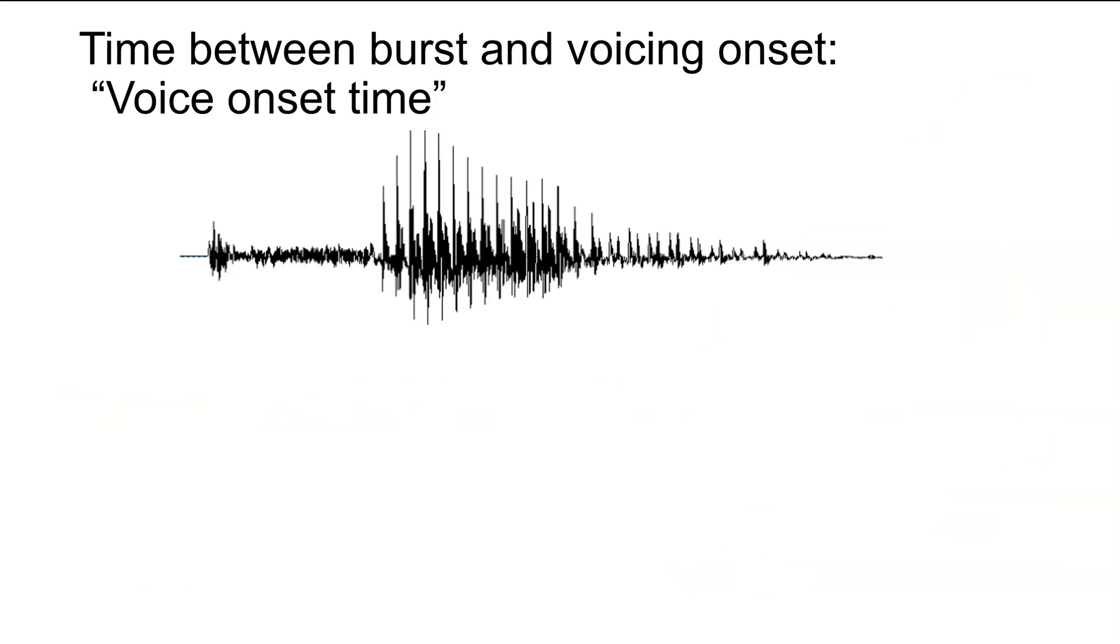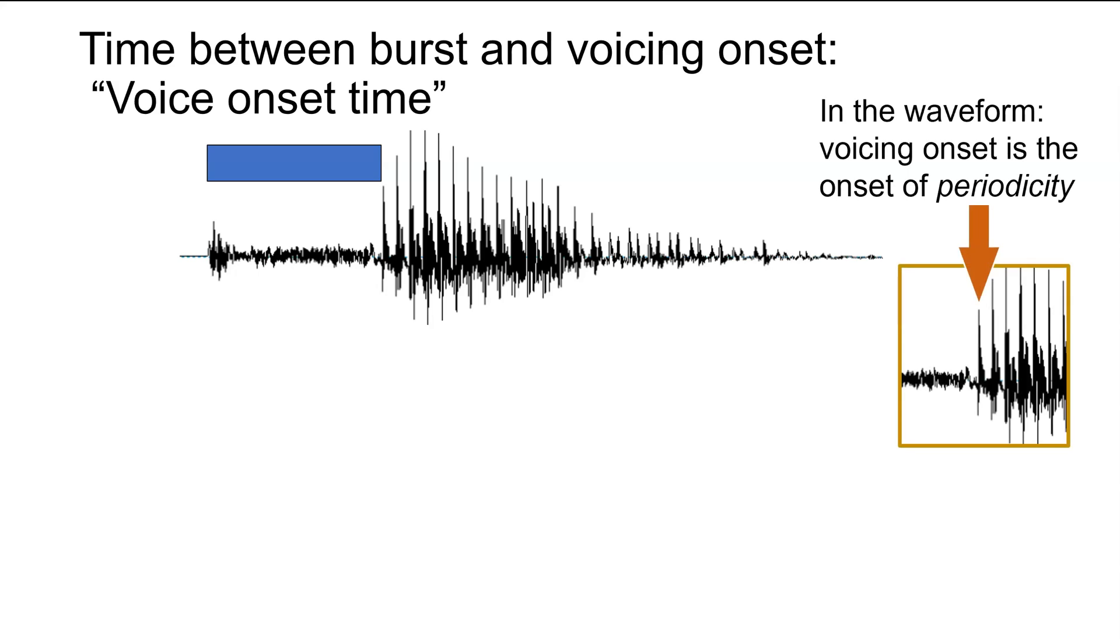So what we're talking about is the time elapsed between the consonant burst and the voicing onset. This is actually what we call the voice onset time. So we're looking at this stretch of the waveform right here. Just as a reminder, the periodicity is where we see those vertical marks that correspond to the vowel. We're normally looking at this in the waveform because we're thinking about the time, and the waveform shows us the exact information in the time domain.